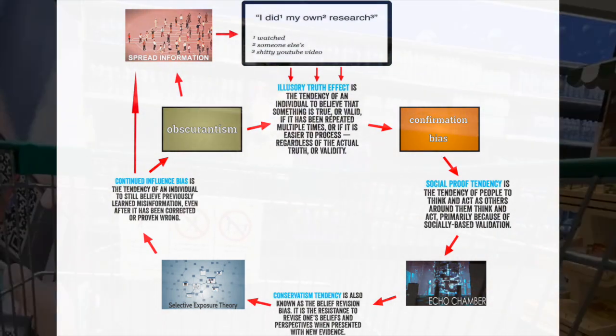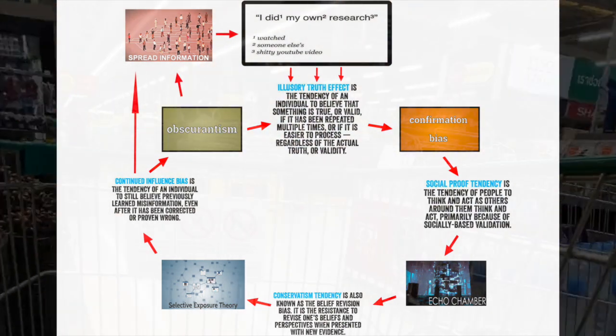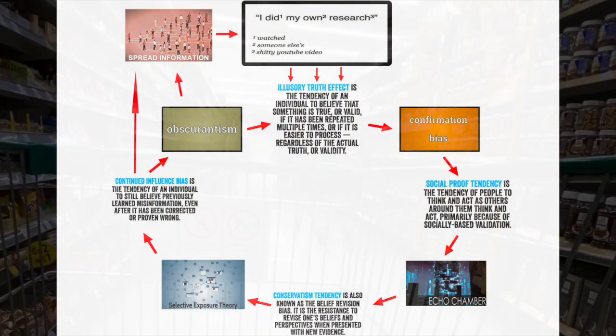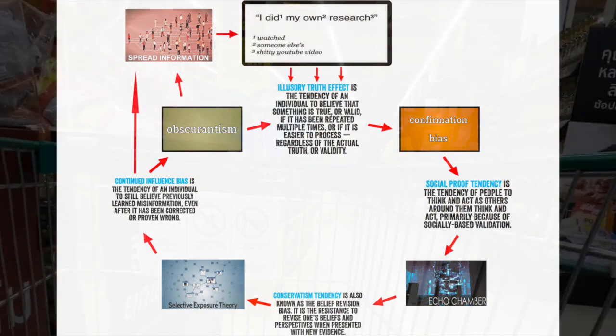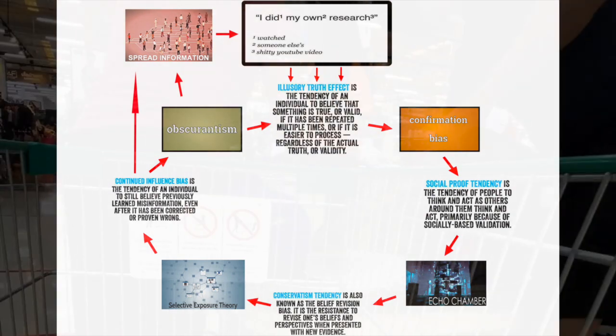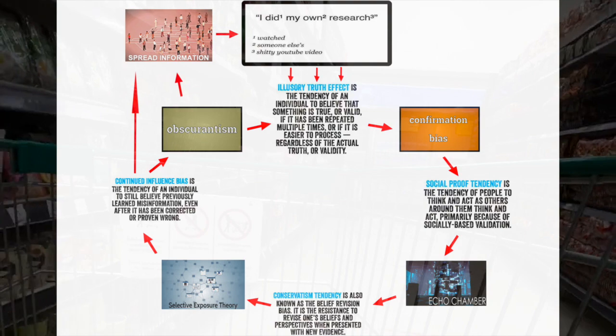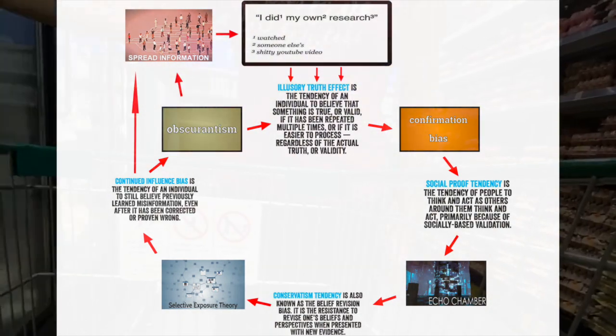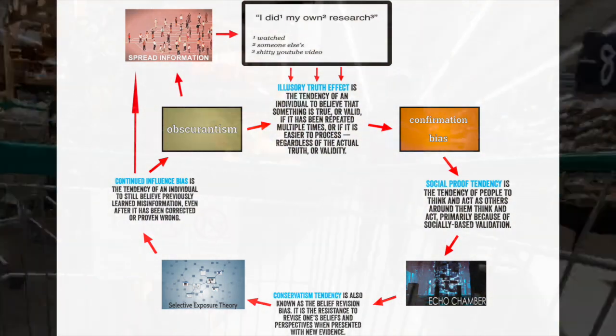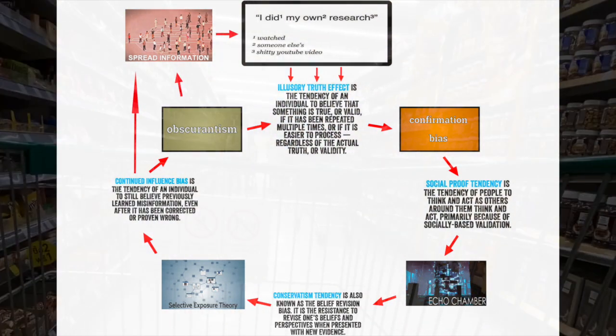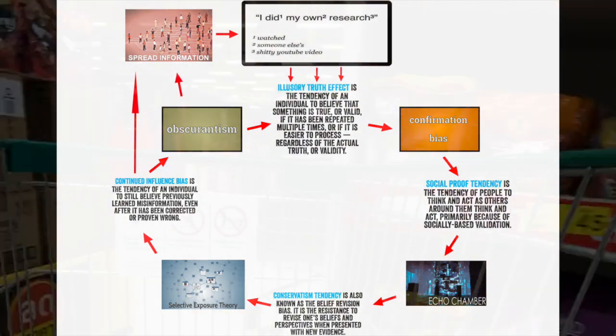This then creates social proof tendency, which is the tendency of people to think and act as others around them do, primarily because of their socially based validation. People will then accept them in what we call an echo chamber, where everyone sits in a room and they all believe in the same practice. Anyone who tries to question anything that they believe in is attacked or ignored, any of their information, because they're not part of that echo chamber and they haven't created a confirmation bias or the illusionary truth effect, which is part of a Dunning-Kruger effect in the flat earth's way.